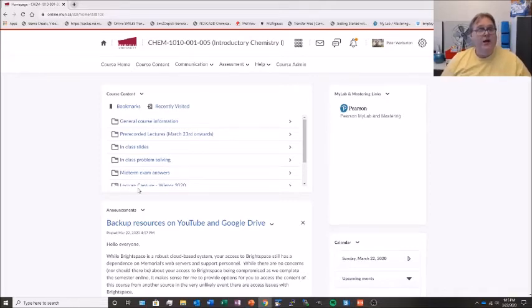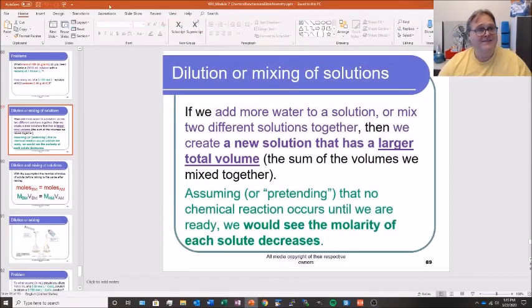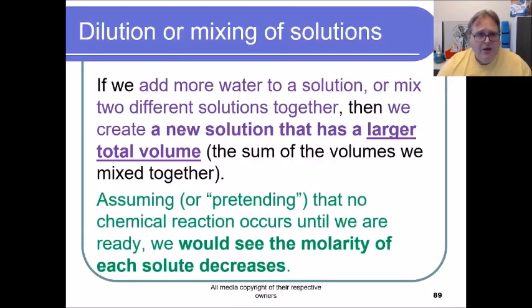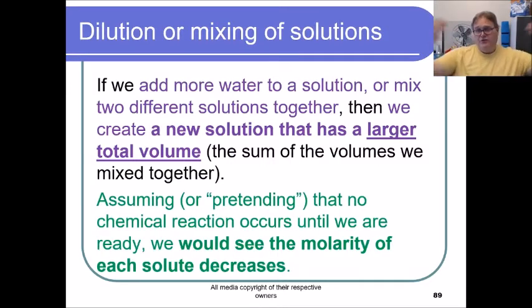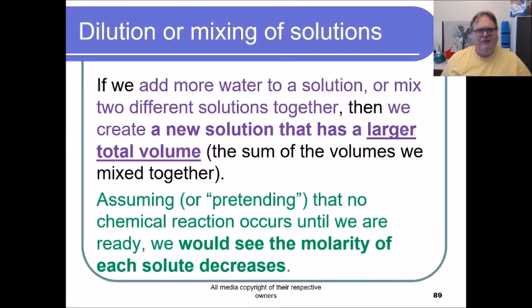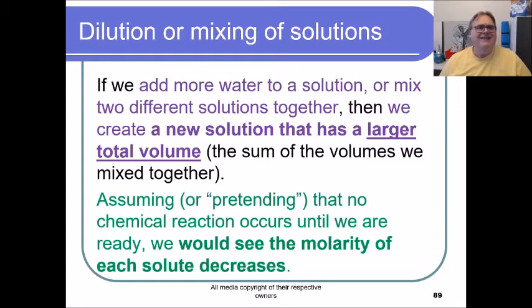What I'd like to do now is continue with the last part of module seven — really the last part of chapter four — where we talk about dilution of solutions and solutions in reaction stoichiometry. We would have seen the idea that when we have stuff dissolved in solution, that's an amount of stuff dissolved in a volume. I use the analogy of kids floating around in a swimming pool: if you've got 10 kids in the shallow end with a barrier and I lift that barrier, those 10 kids can now spread out over the entire swimming pool. That's the same as the idea of dilution or mixing of solutions.